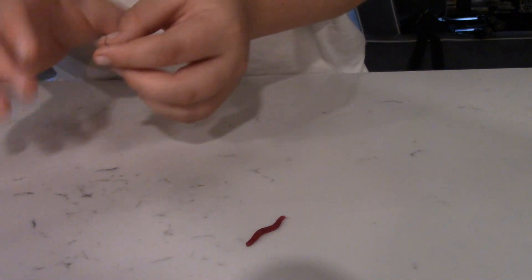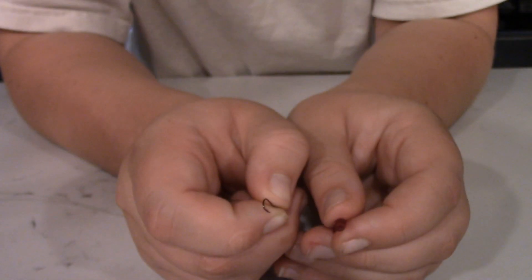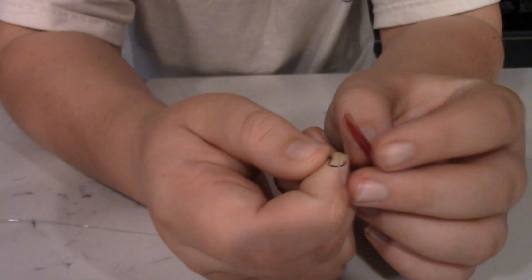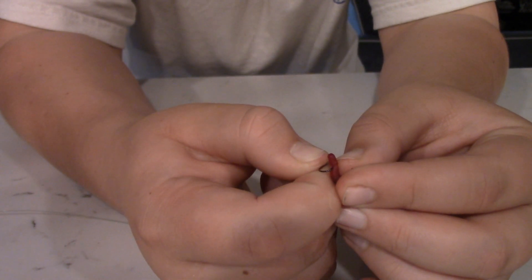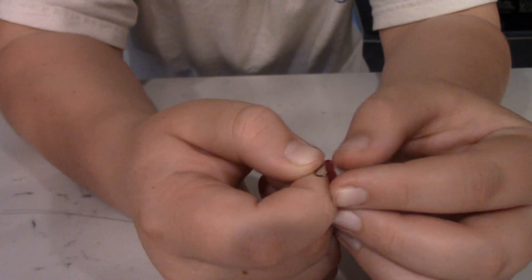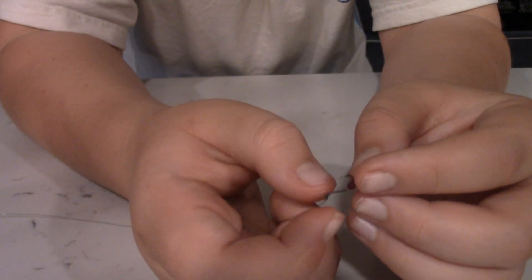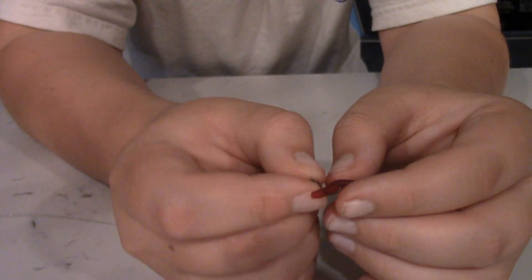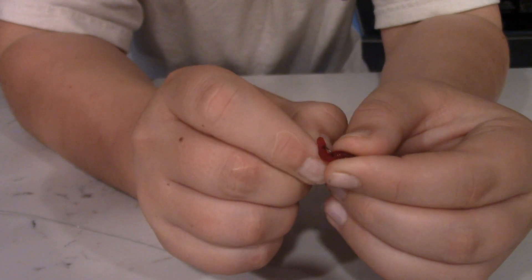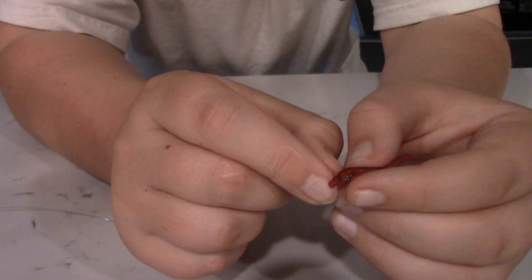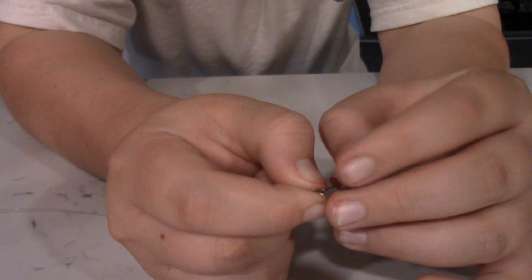Now I'm going to show you how to put a worm on the hook that you are going to be using. First you grab the worm. I'm using a plastic worm. Then you put the worm through the hook, and then you put it through the hook one more time so that there's a couple centimeters of worm hanging off the hook.